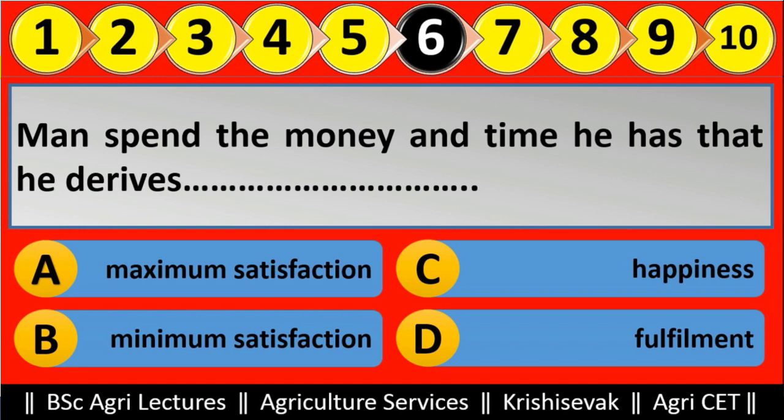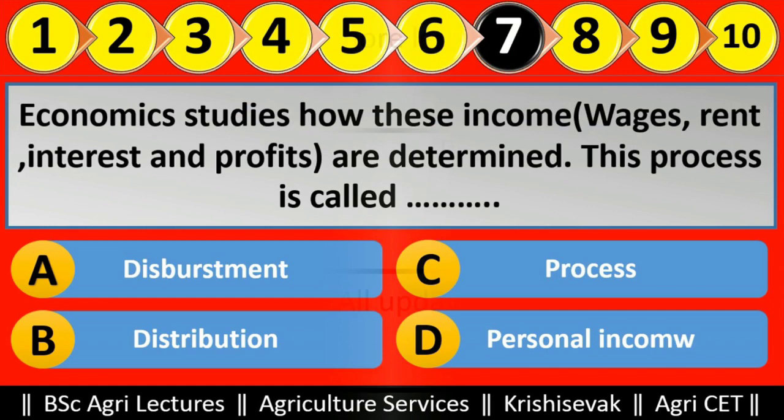The right answer for question six is: man spends the money and time he has so that he derives maximum satisfaction. That is option A. Let's see question number seventh: Economics studies how incomes — for example wages, rent, interest, and profits — are determined.